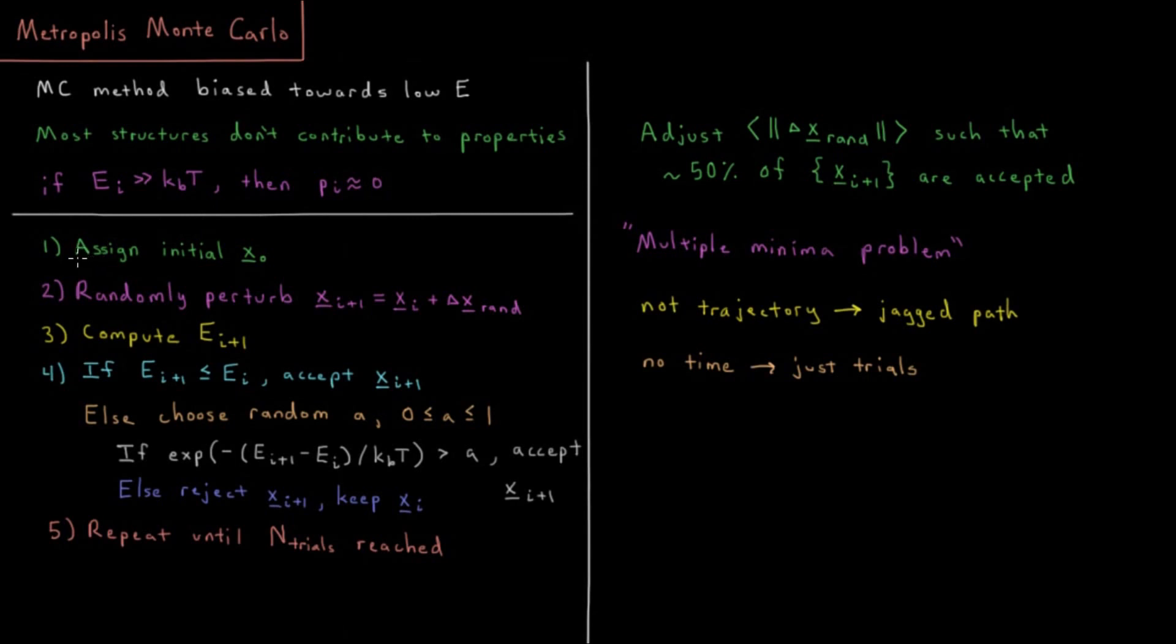The steps in this algorithm: assign the initial geometry of the system. You need some type of input to guess what the coordinates are, whether that's drawing the molecule in Avogadro, downloading a PDB file, whatever it is. Then the next step is to randomly perturb the coordinates. The next iteration's coordinates equal the current iteration's coordinates plus some random displacement vector, oftentimes just a vector of random numbers in some magnitude you have selected.